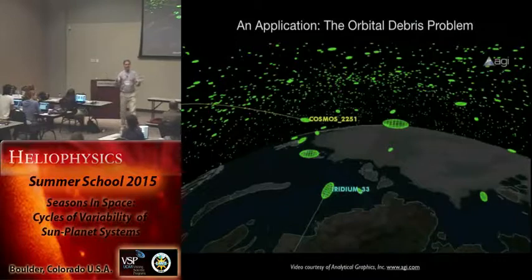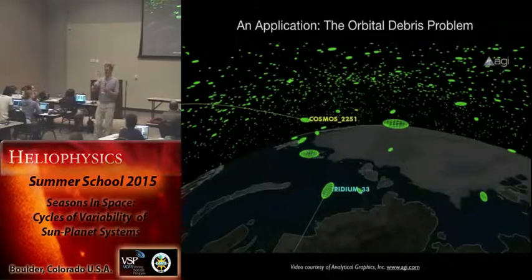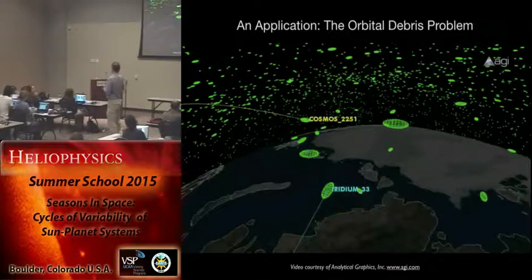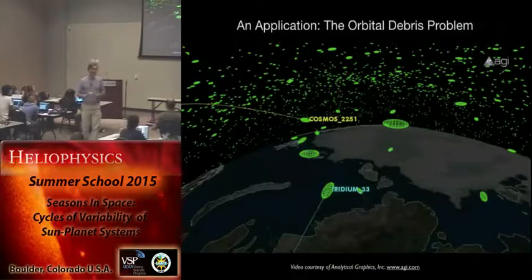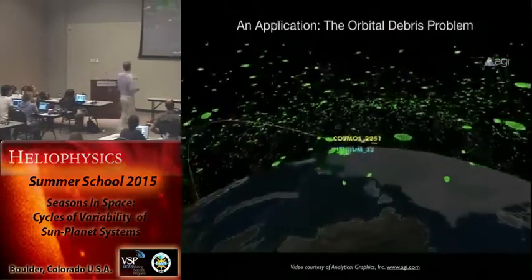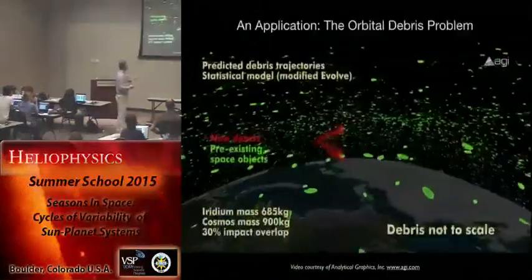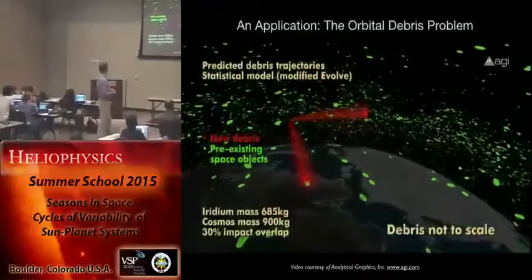People routinely track orbital debris, but not continuously. What you'll do is make an observation, put the object in your catalog, and when you want to know where it is, calculate based on where it was, the density, and the ballistic coefficient. In this particular instance, there was an actual collision — the Iridium-Cosmos collision — that led to the creation of a lot of orbital debris, as you can see in the plot of orbital debris as a function of time.